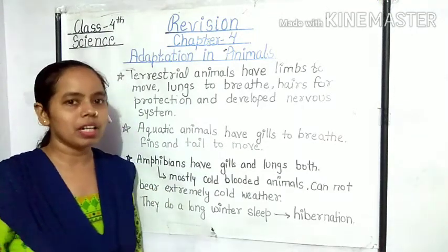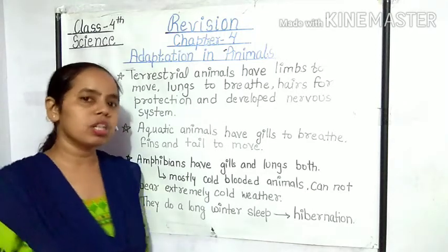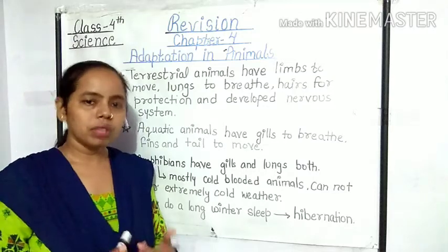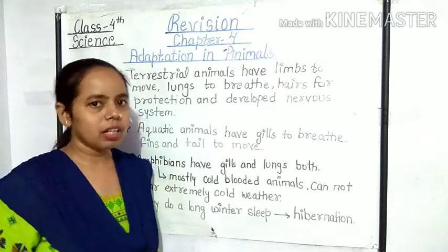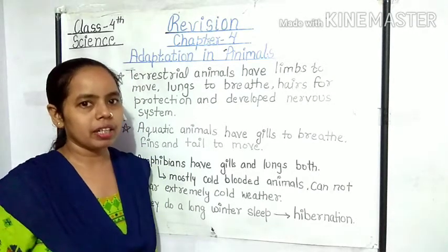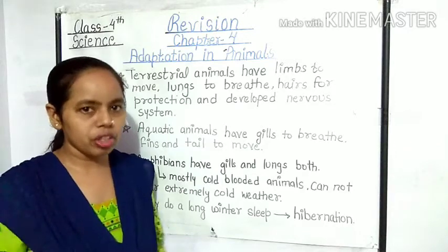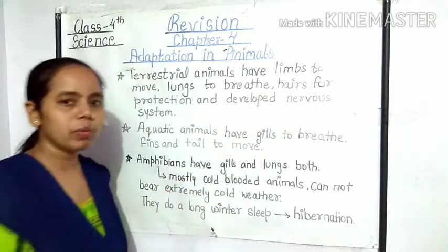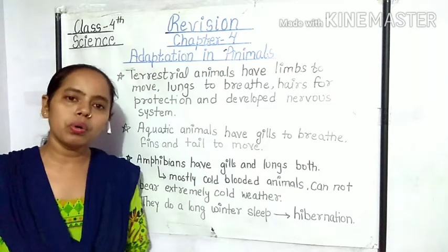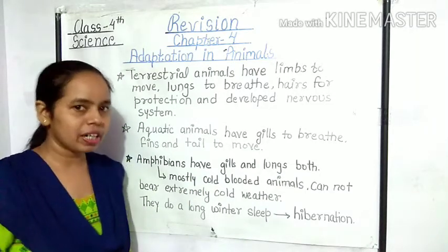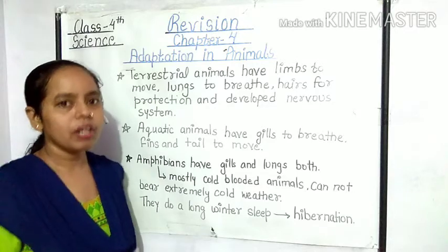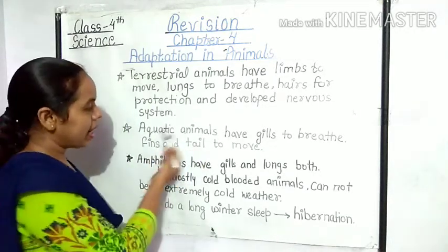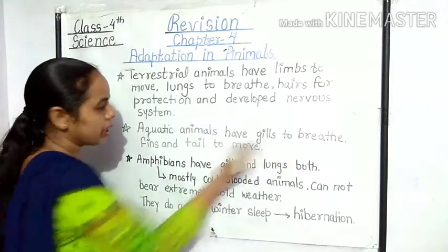Terrestrial animals are mostly cold-blooded — उनकी पूरी body पर fur पाए जाते हैं जो उनको बचाके रखते हैं। इसके अलावा इनका जो nervous system होता है वह बहुत ही developed होता है जिससे उनको easily land पर survive करने में बहुत ही help मिलती है। Okay, next है हमारा aquatic animals.